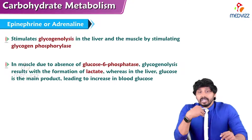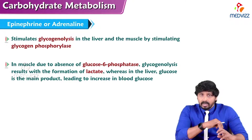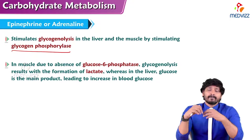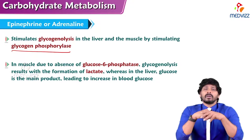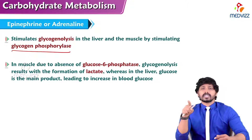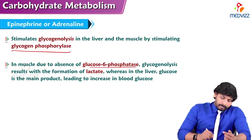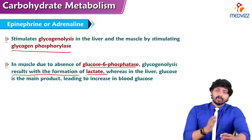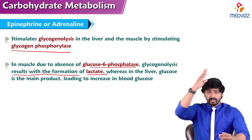Epinephrine stimulates glycogenolysis in both the liver and muscle by stimulating glycogen phosphorylase. In the liver, glycogenolysis produces free glucose. However, in muscle, because there is no enzyme glucose 6-phosphatase, free glucose is not produced — instead, glucose 6-phosphate is formed in skeletal muscle and is involved in glycolysis to produce energy. The resulting lactate is transported back to the liver where gluconeogenesis takes place: lactate → pyruvate → phosphoenolpyruvate → reversal of glycolysis → free glucose, increasing blood glucose levels.